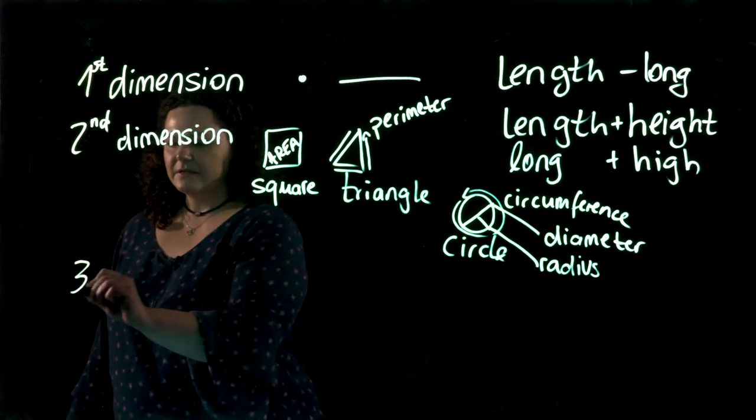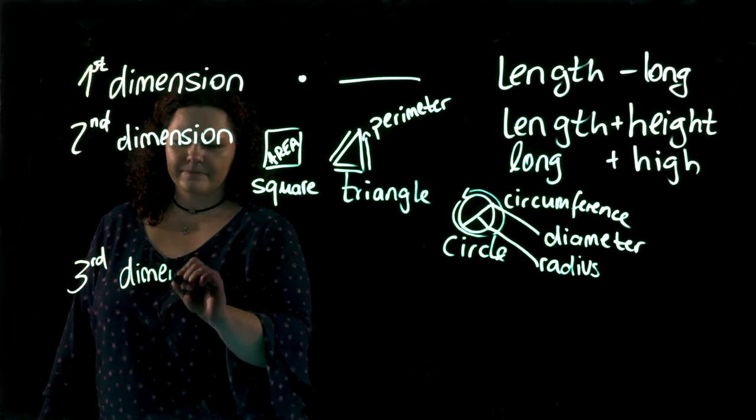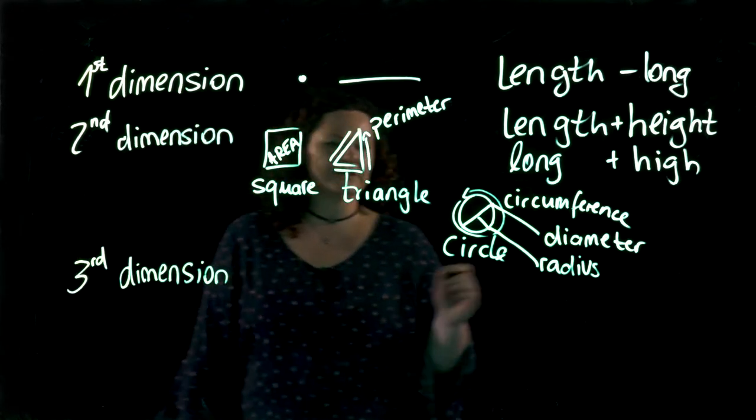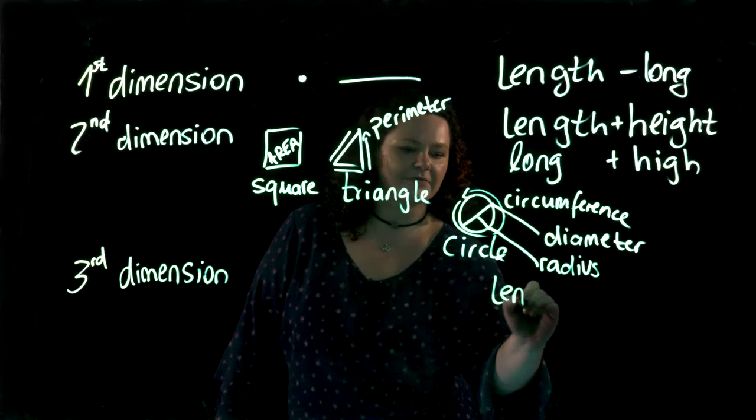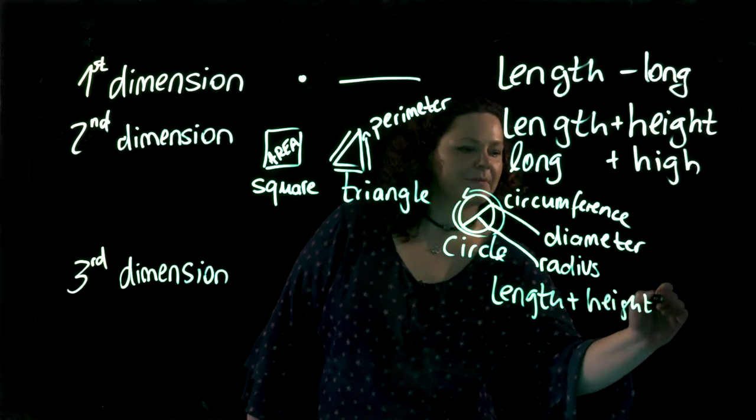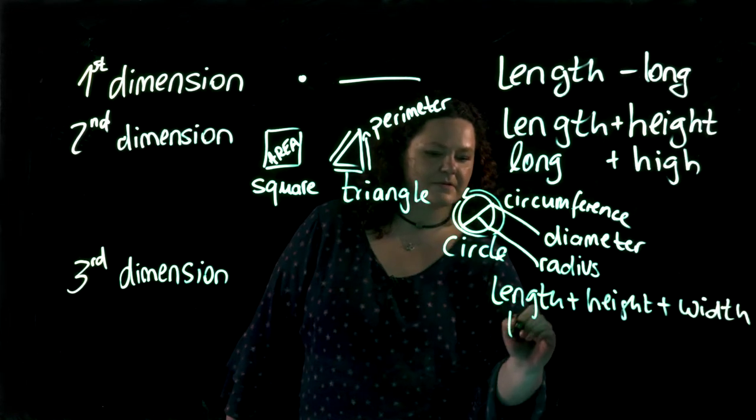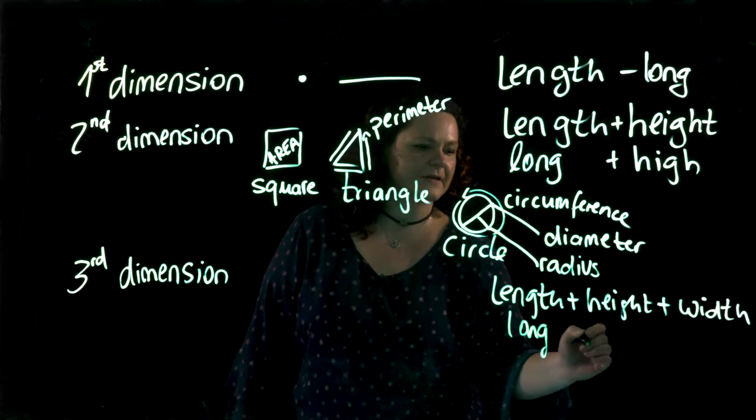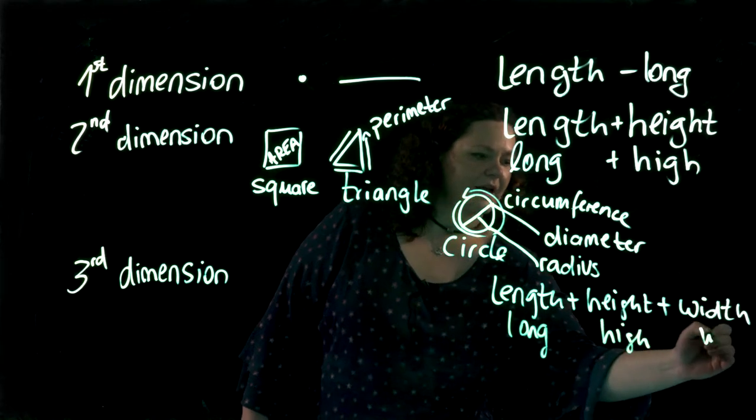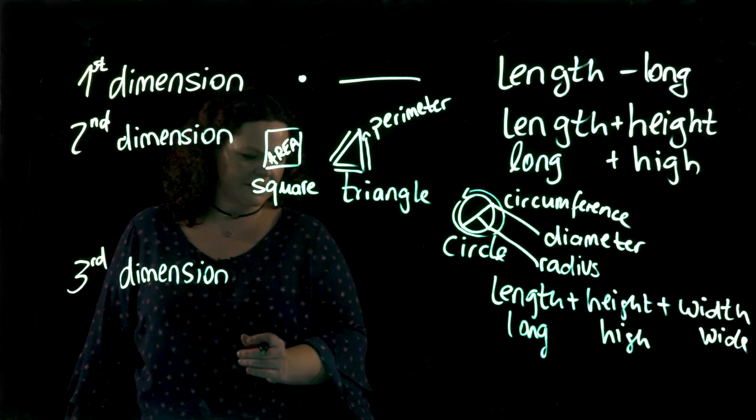Now let's quickly take a look at the third dimension as well. In the third dimension we again have length, we have the height of a shape and we also, this is new, have the width. So we can look at how long something is, how high something is and how wide something is. So three dimensions.